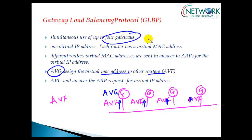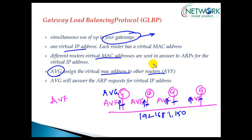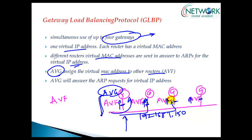Simultaneously we can have up to four gateways for one group with only one virtual IP for all gateways — in my example, 192.168.1.50. However, each gateway is assigned a separate virtual MAC address, so with four physical gateways we have four separate virtual MACs. Different routers have different virtual MACs sent in response to ARP for the virtual IP address. The AVG replies to ARP messages from the LAN, ensuring traffic is distributed across multiple AVFs.